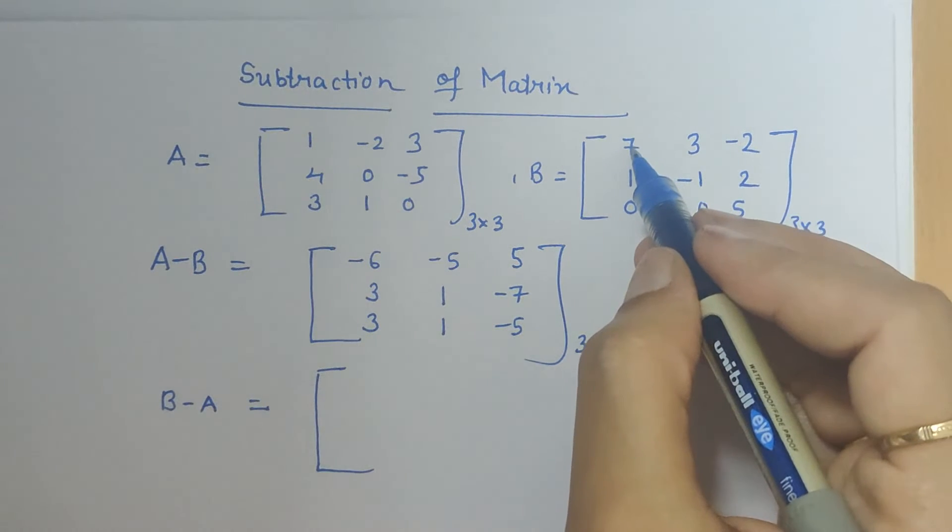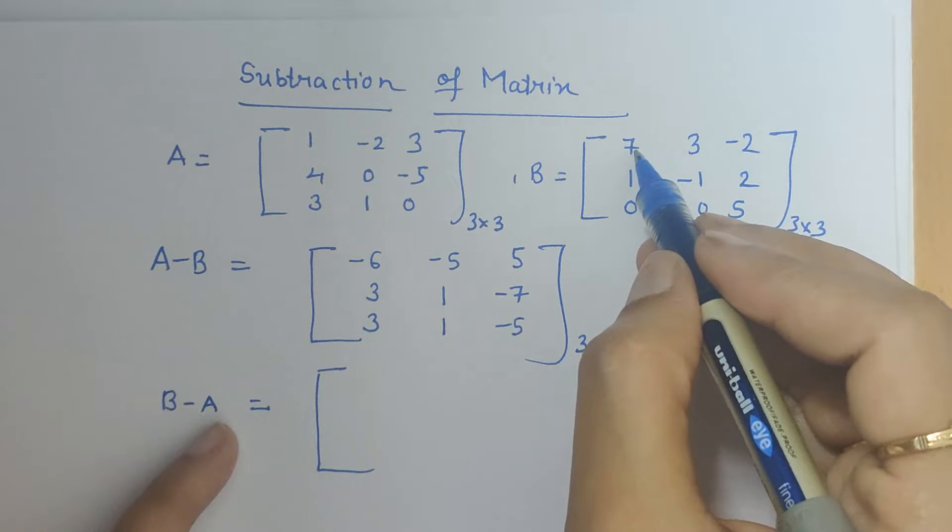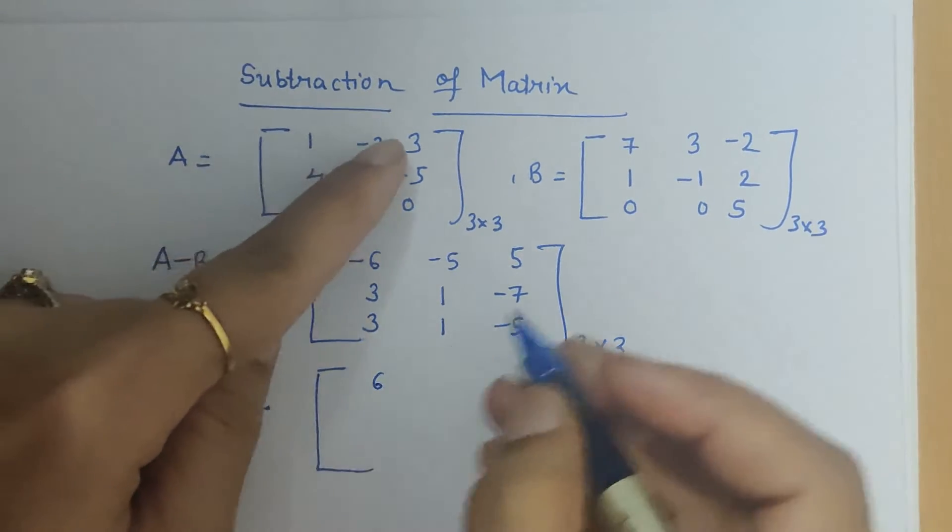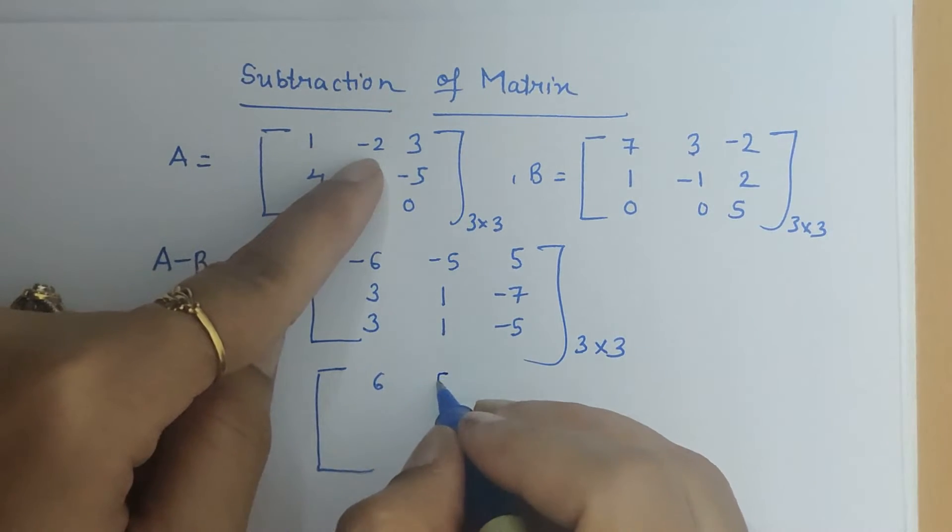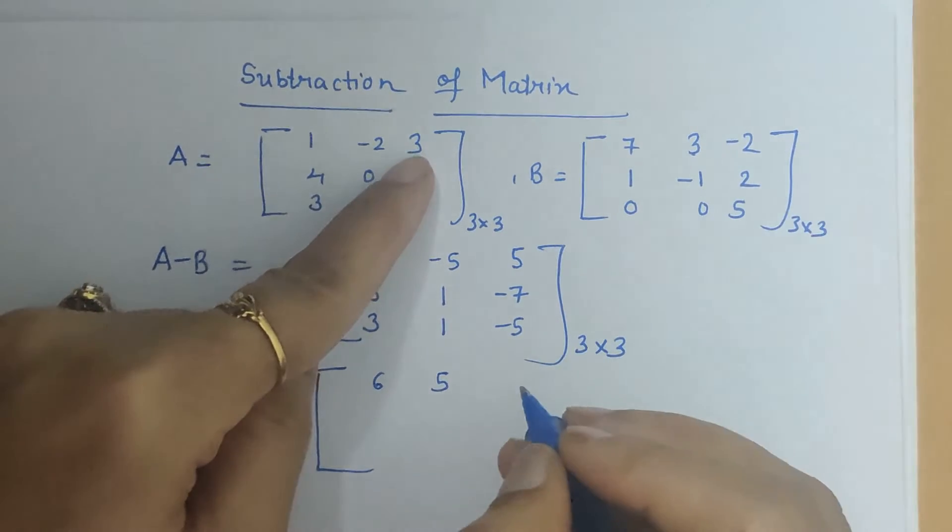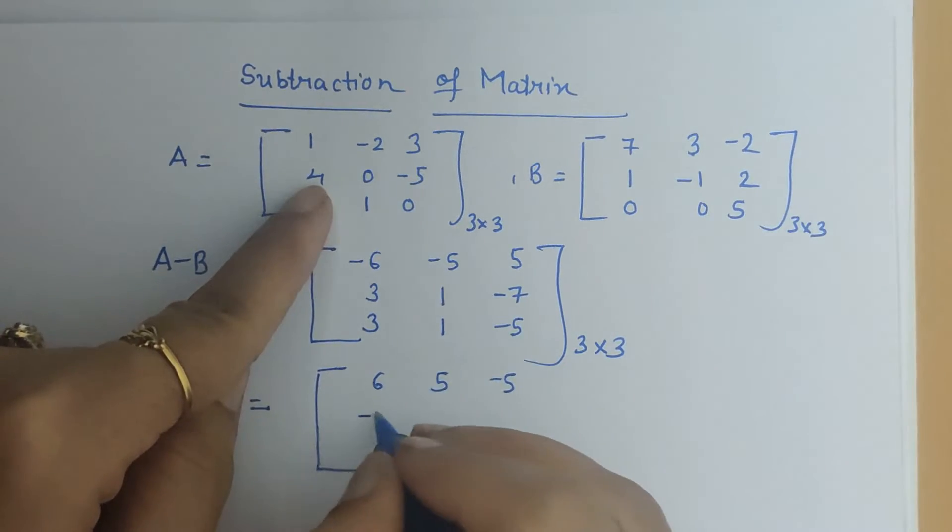So for B minus A first we have to choose element of matrix B and then A that is 7 minus 1 is 6, 3 minus of minus 2 that is 3 plus 2 is 5, minus 2 minus 3 is minus 5, then 1 minus 4 is minus 3.